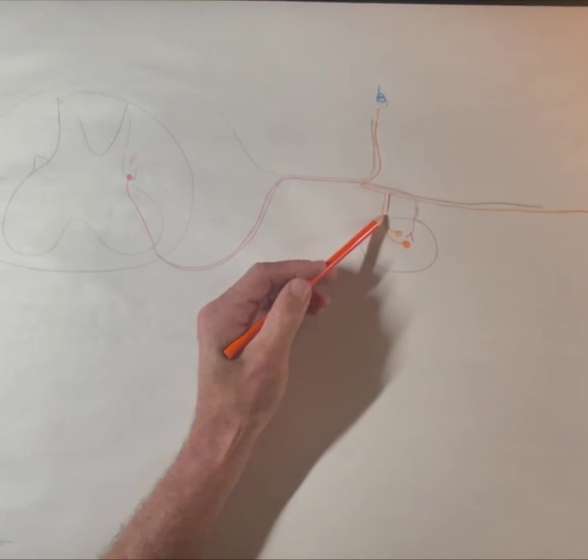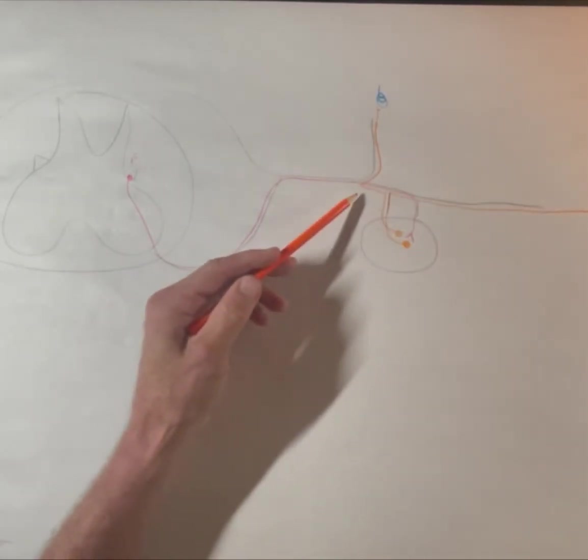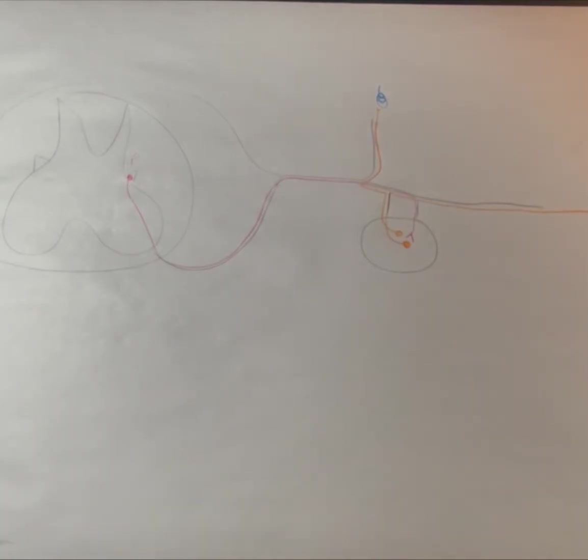Which then goes out via the gray ramus back to the spinal nerve. And it's either going to go out the ventral ramus or the dorsal ramus to its target organ. That is one possibility for how this goes.